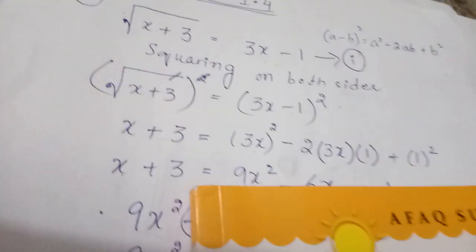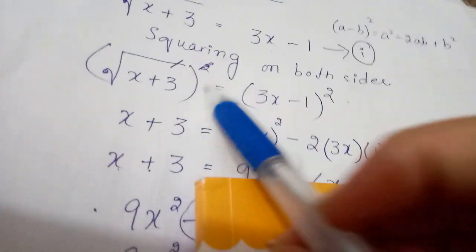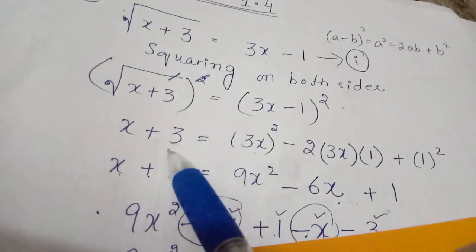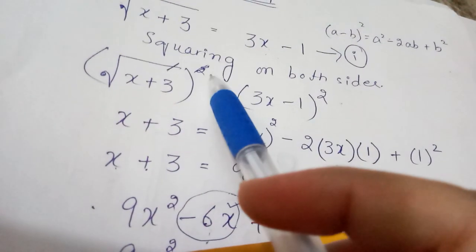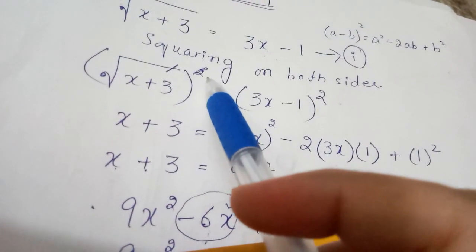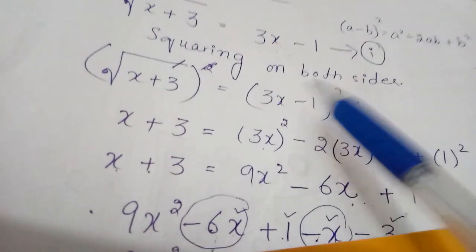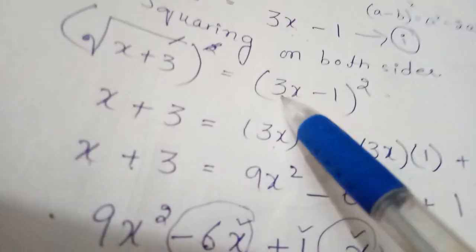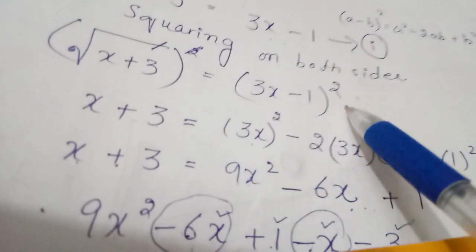After applying squaring on both sides, from the left side we get x plus 3 because the radical sign is cancelled. From the right side we get (3x − 1) whole square, since we have two terms with a minus sign.